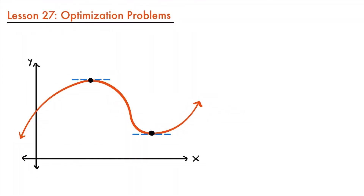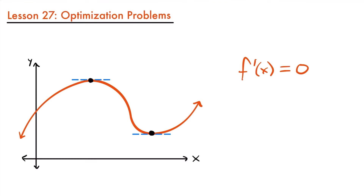Welcome back. One of the important applications of calculus is being able to determine the minimum and maximum values of a function. We've seen how to look at a function and find its relative minimums and maximums by finding the derivative and setting it equal to zero, because at these points the slope of our function is equal to zero. Since the first derivative equals that slope, setting it equal to zero and solving for x is how we find where our maximum and minimum values are.